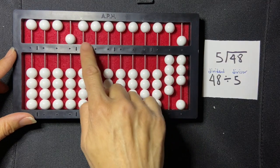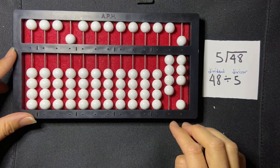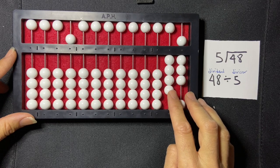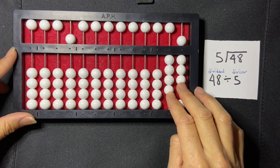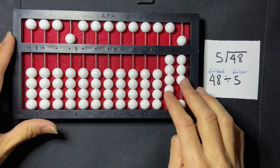I'm going to set my quotient in the millions period. So the first thing I do is look at 48. How many times does 5 go into 48?